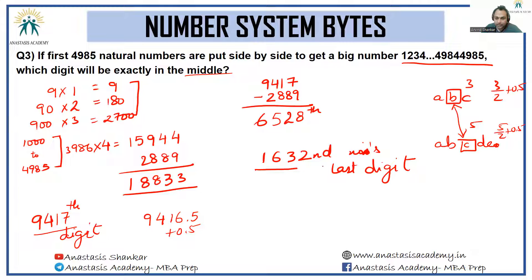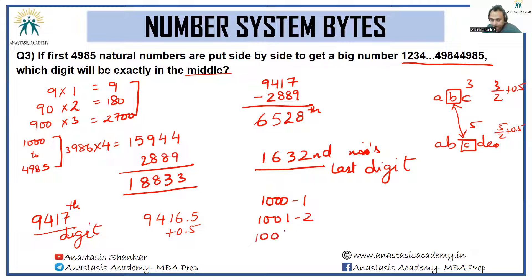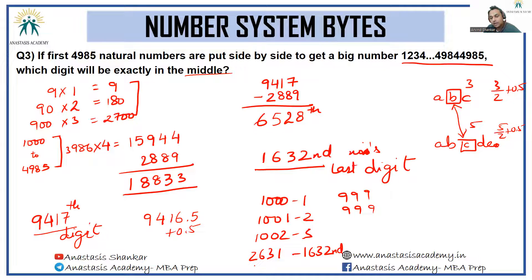Among four-digit numbers, 1000 is the 1st, 1001 is the 2nd — the nth four-digit number is 999 + n. So the 1632nd four-digit number is 999 + 1632 = 2631. The last digit of 2631 is the answer: 1.